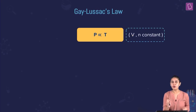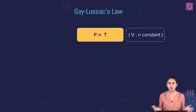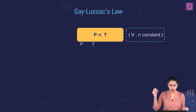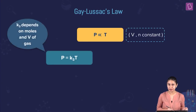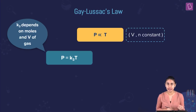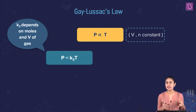Let's remove this proportionality sign. A constant will come, so if we remove the proportionality sign, P is equal to K3T. I'm writing K3 here because this is the third law that we are talking about, hence K3. But you can simply write K and it works.